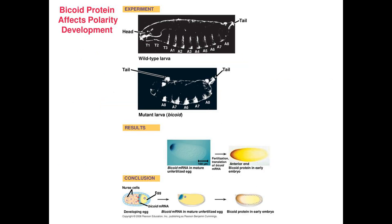Such genetic regulatory processes involved in development were first studied in the fruit fly Drosophila. Here, scientists discovered that a gene called bicoid plays a very important role for the development of the fruit fly. When this gene is mutated, the fruit fly does not develop a head. Instead, it develops tail structures on both ends of the body.